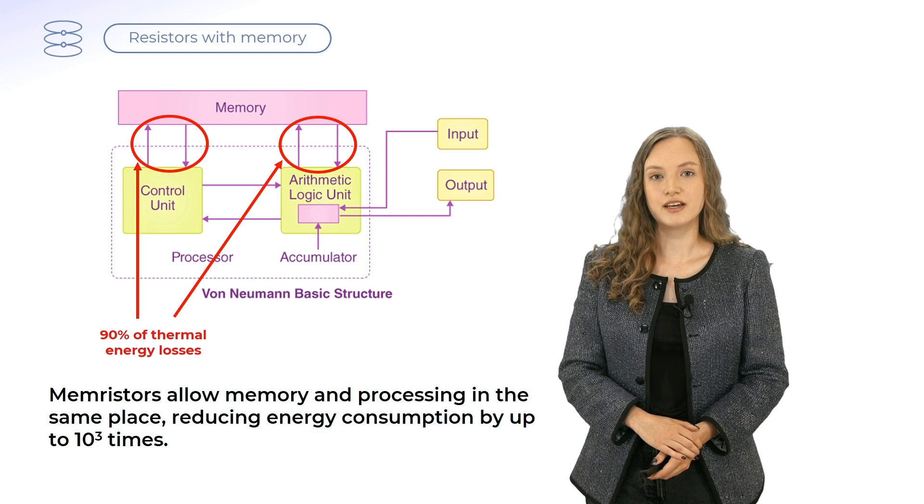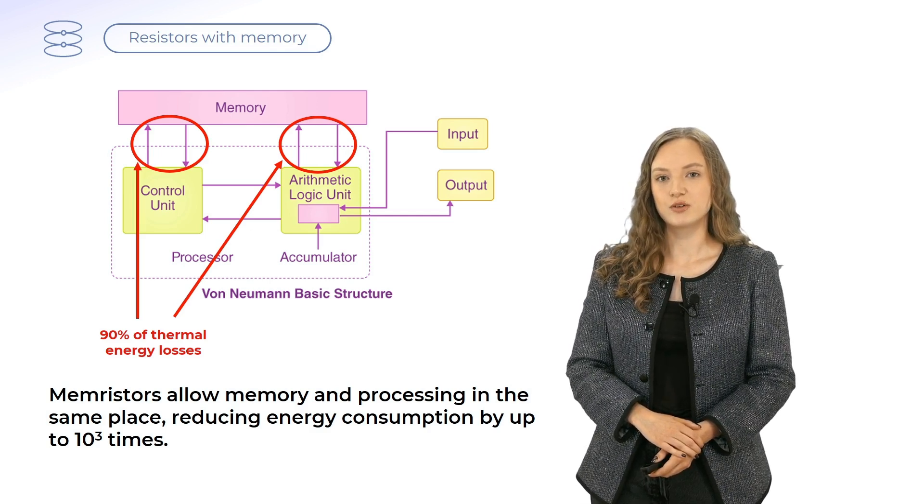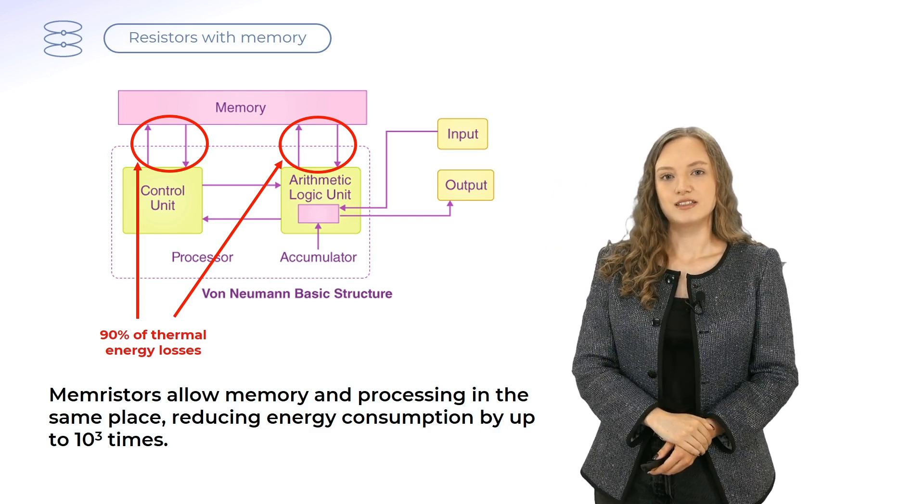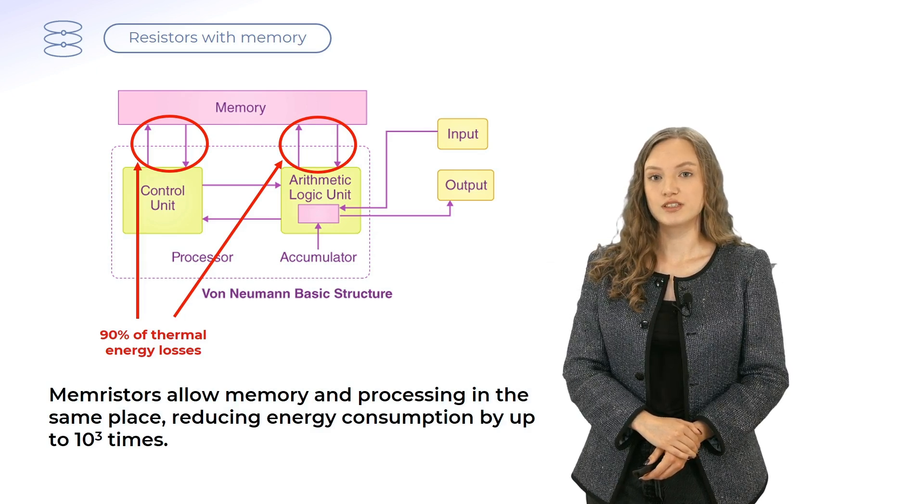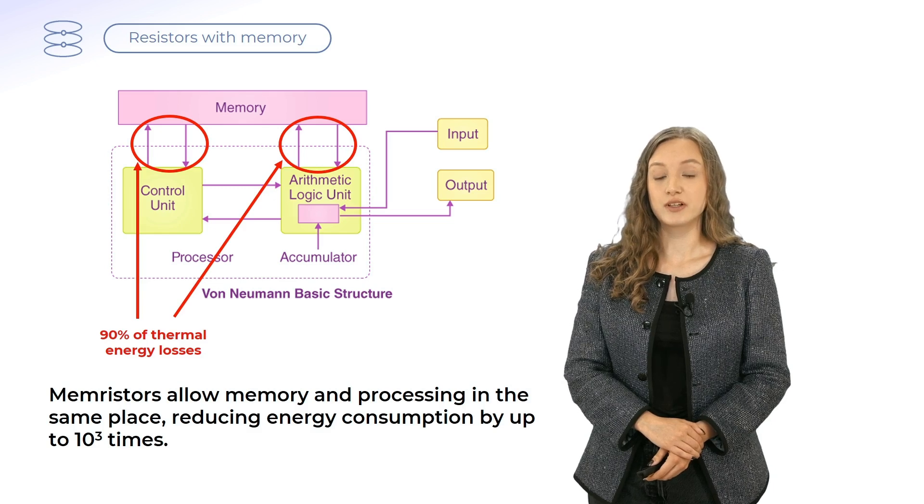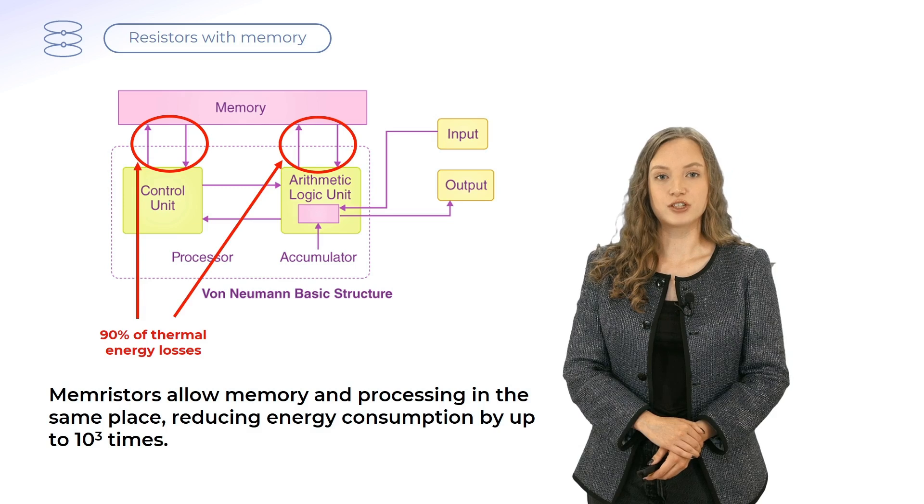Consider current processors. They have a so-called von Neumann architecture, which means that the processing unit is separated from the memory unit and operations require constant exchange of data between the two units. This exchange actually accounts for 90% of thermal energy losses, which makes von Neumann architecture energy inefficient.